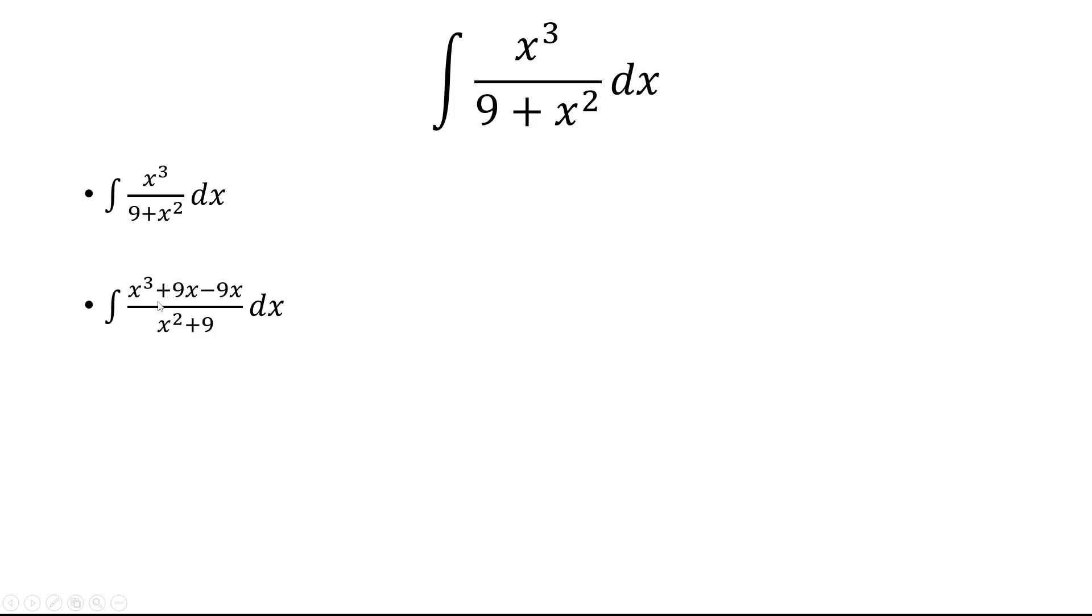Let's first rewrite this as x cubed plus 9x minus 9x. So adding and subtracting 9x, this will cancel it out. And the whole goal here is to separate this into two separate fractions. The first fraction being the x cubed plus 9x over x squared plus 9, and then minus 9x over x squared plus 9.